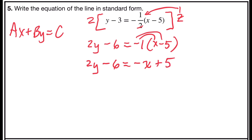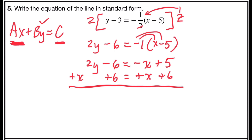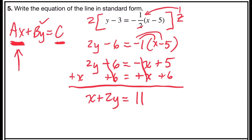Now I'm going to transform. I need my x terms on the left side and my number terms on the right side. My y term is already on the left, so I'm going to add x to both sides and add 6 to both sides. That gives me x plus 2y on the left; negative 6 plus 6 is 0. Negative x plus x on the right is 0, and 5 plus 6 is 11. I have coefficients 1, 2, and 11 — all integers, and my leading a term is positive. In standard form: x plus 2y equals 11.